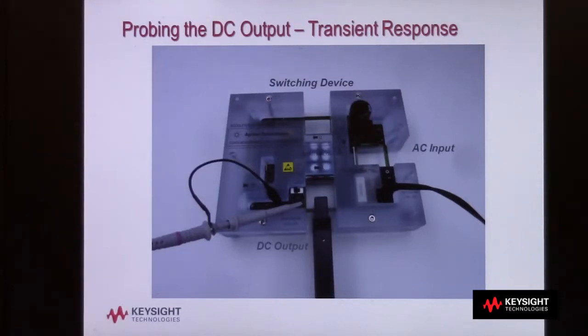The first task in making a transient response measurement is to probe the DC output with voltage and current probes. In this case, we'll be using a standard 10 to 1 passive voltage probe and an AC-DC clamp on current probe.